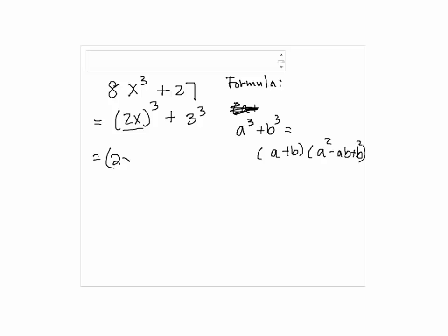First we add 2x and 3, and square the first term, and subtract the product of first and second term, and add the square of the third term. So, 2x plus 3 times 4x squared minus 6x plus 9.